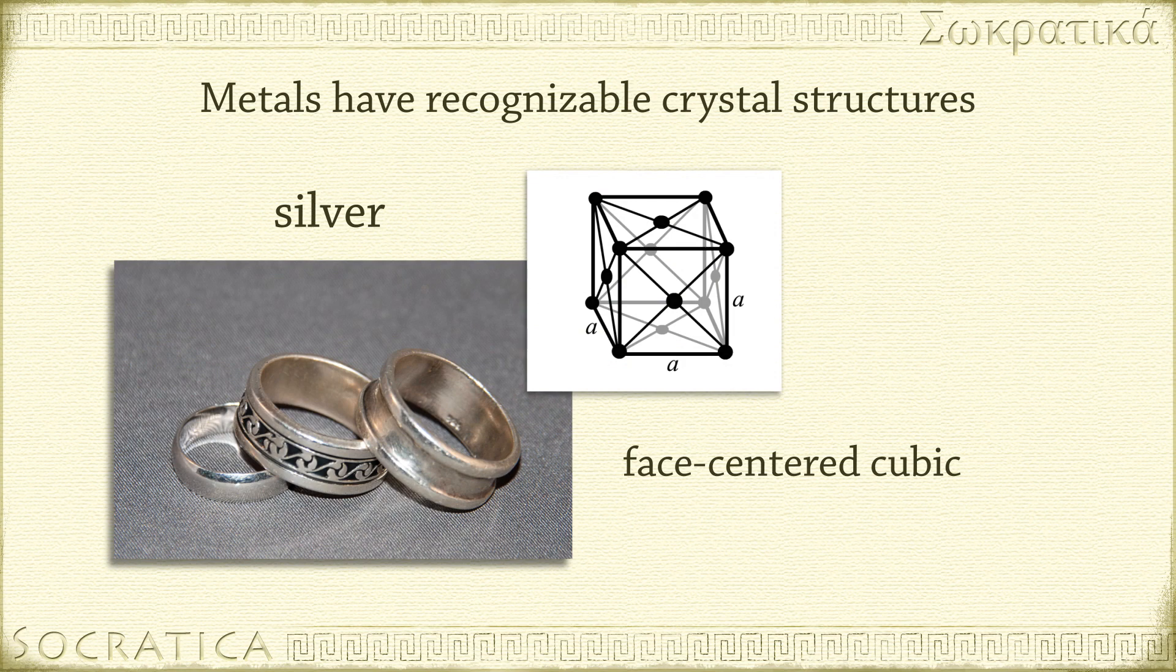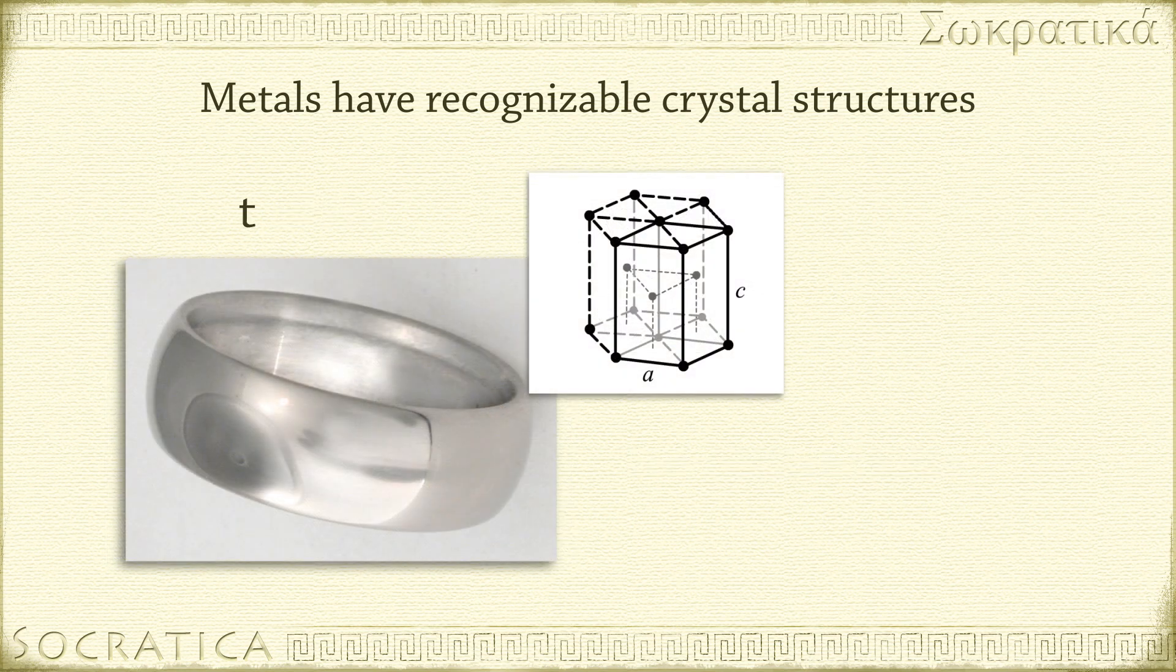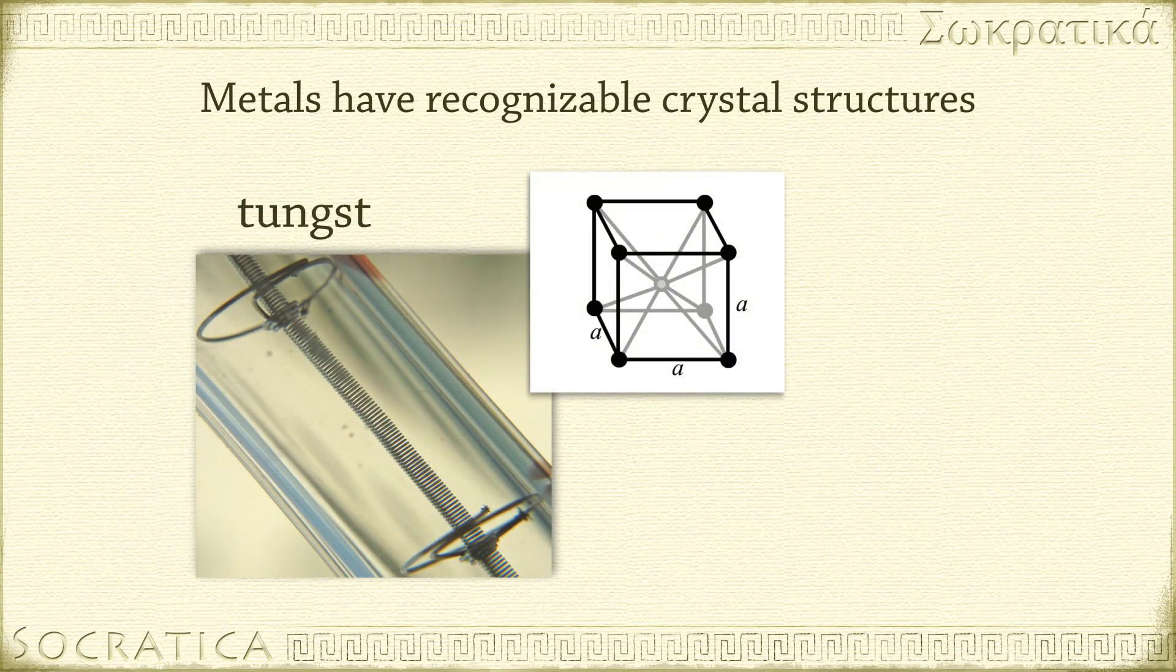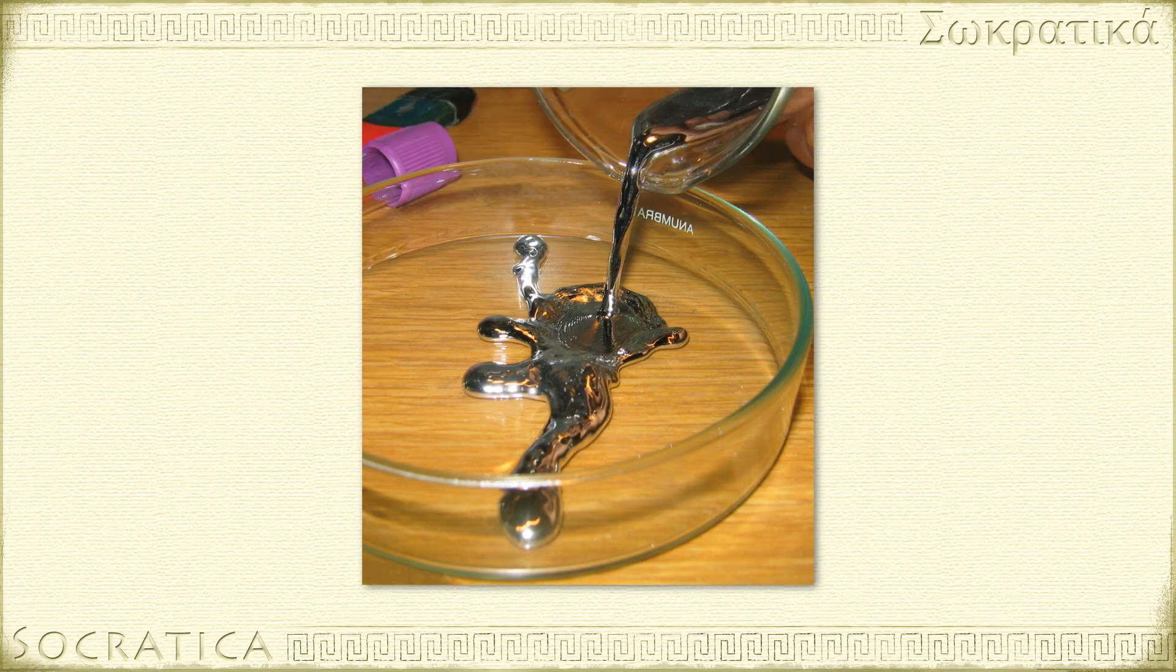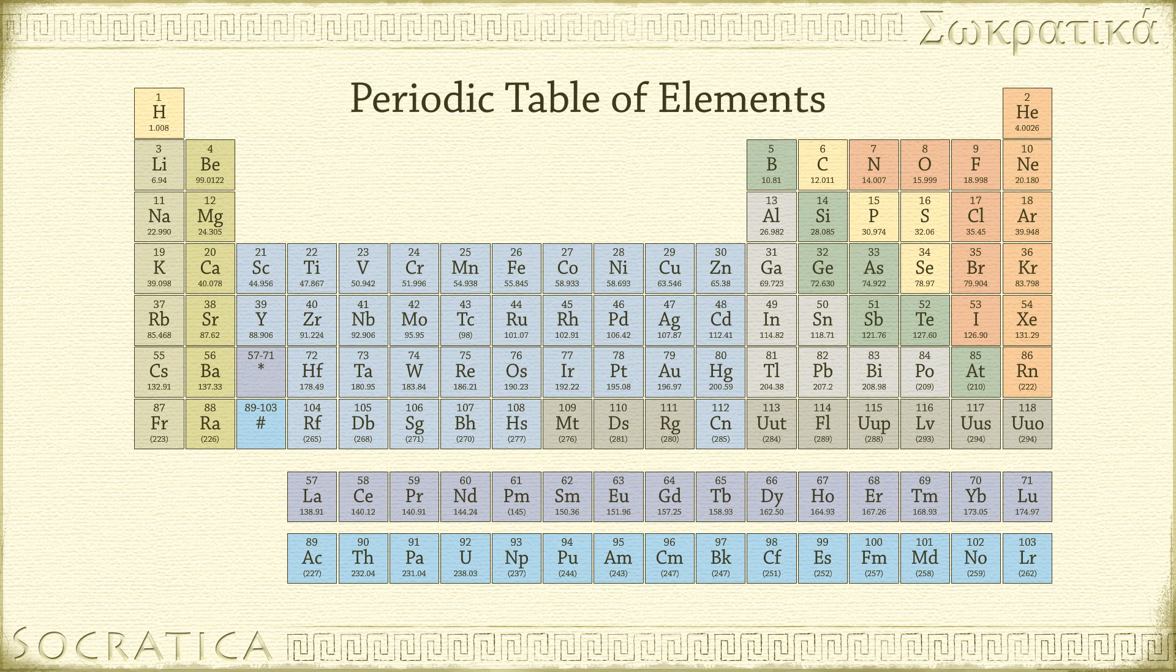Almost all metals are solid at room temperature, the cations forming a recognizable, tightly packed shape. Can you think of the exception? Mercury is the only metal that is liquid at room temperature. There are four other metals that melt very close to room temperature.